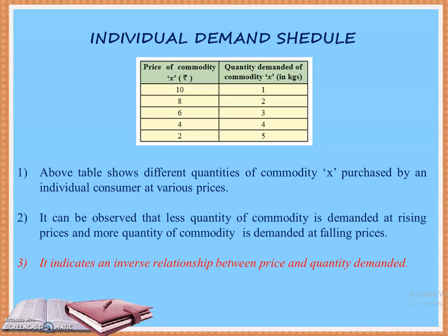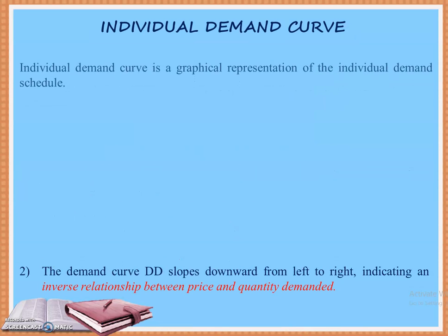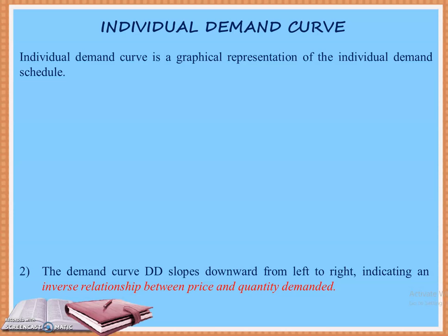What this indicates is an inverse relationship between price and commodity demand. As the price falls, the demand increases — opposite, i.e., inverse relationship. Jaise hi commodity ki price badhti hai, demand kam ho jaati hai; jaise hi commodity ki price kam hoti hai, consumers ki demand badhne lagti hai.